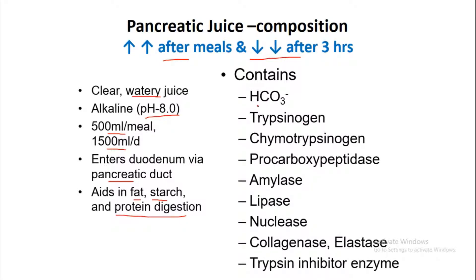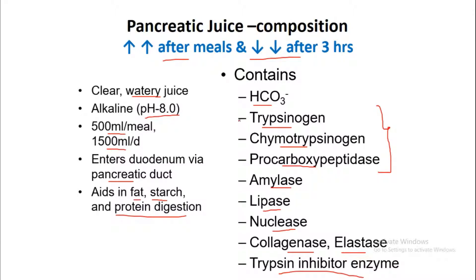Pancreatic juice also contains different types of enzymes and ions, including bicarbonate ions. The enzymes include trypsinogen, chymotrypsinogen, and procarboxypeptidase, which are the inactive forms of proteolytic enzymes. It also contains amylase, lipase, nuclease, collagenase, elastase, and trypsin inhibitor enzyme. These are known as pancreatic amylase, pancreatic lipase, and pancreatic nuclease, as they are secreted from the pancreas.